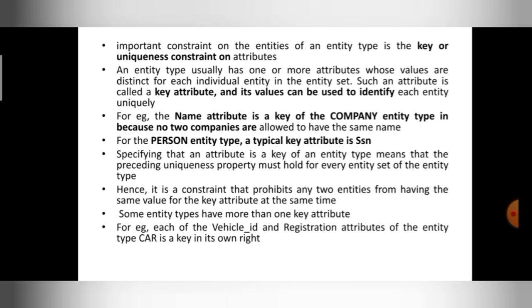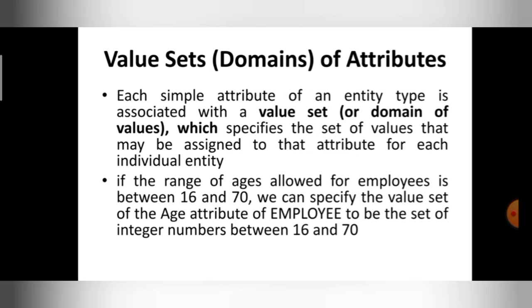Next, value sets or domains of attributes. Each attribute of an entity type is associated with a value set. I can define some range for the values of an attribute. For example, for an employee, if the allowed range of age is between 16 and 70, I can specify the value set of the age attribute should be within 16 and 70 only — if anybody tries to enter an age above 70, it won't be accepted. I can specify a range or a set of values for an attribute to restrict what can be entered.